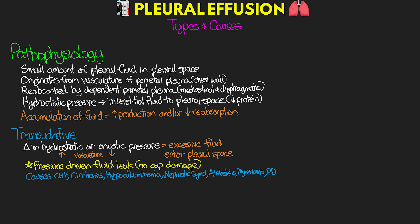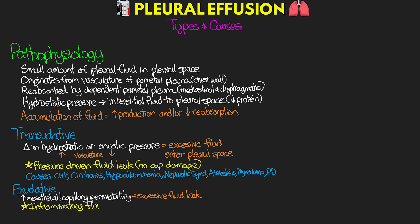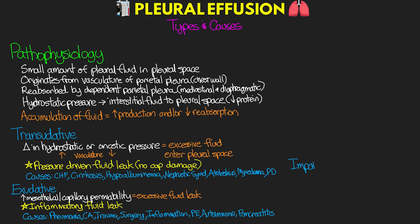Another type is exudative, which results from increased mesothelial and capillary permeability allowing excessive fluid to leak into the pleural space — think of this as an inflammatory fluid leak. Causes include pneumonia, cancer, trauma and surgery, general inflammation, pulmonary embolism, autoimmune disorders, and pancreatitis, just to name a few. We can also have generally impaired lymphatic drainage or leakage of other fluids.